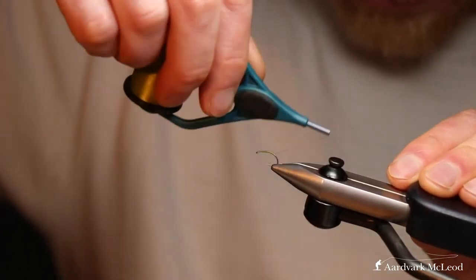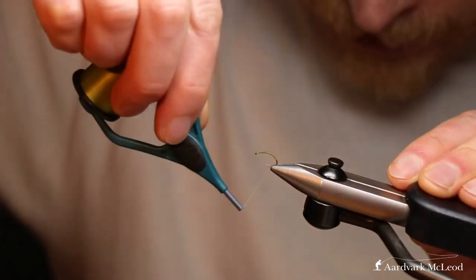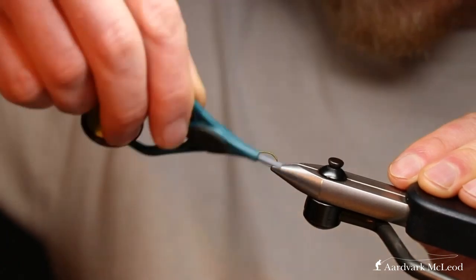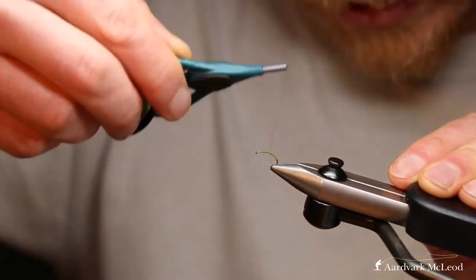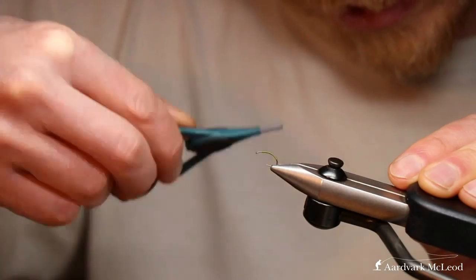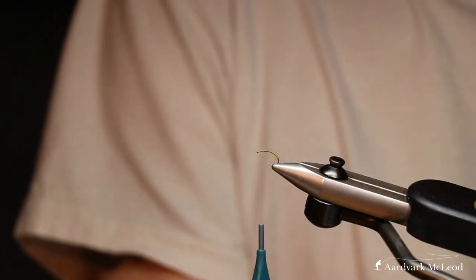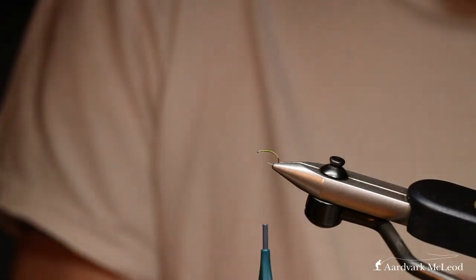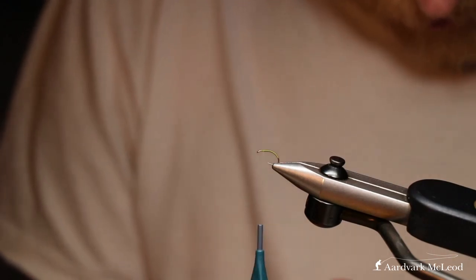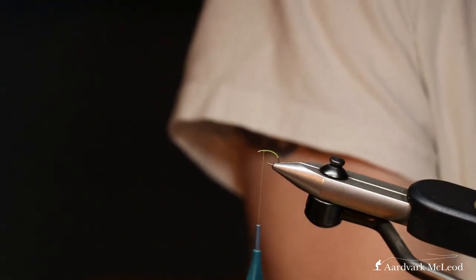And we're going to start again just back from the eye of the hook. Now we need to focus a little bit more on our thread work because we're not actually going to put any dubbing on this body. It's all going to be thread-based. So we take this round almost to the extent of the bend and then bring it back up on itself. And that's forming our body as we go. And generally once down and once back up is more than enough to create the body on these flies.